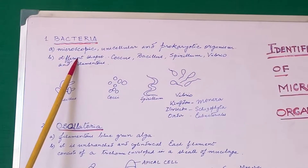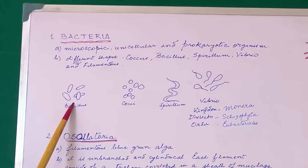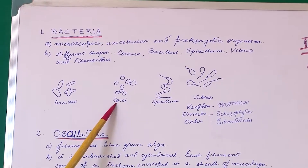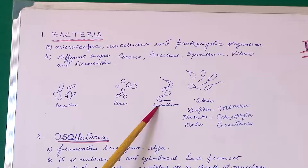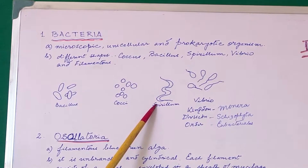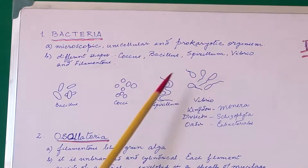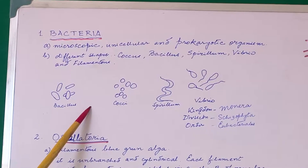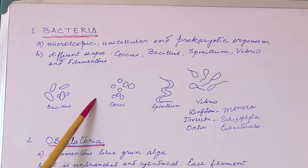Bacteria are of different shapes. They can be rod-shaped — we call them bacillus. They can be circular — they are cocci. They could be spiral — we call them spirillum. They could be comma-shaped, or vibrio. These bacteria are harmful to us as well as useful to us.